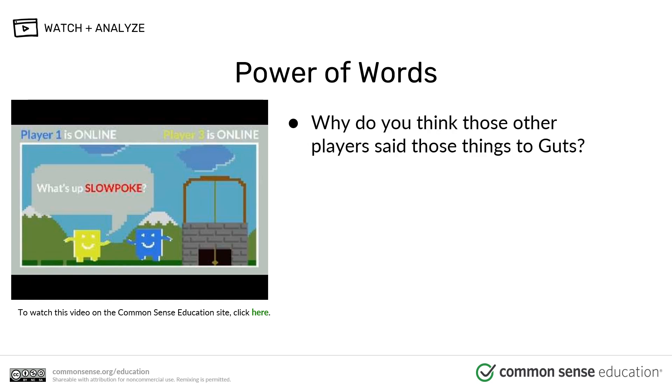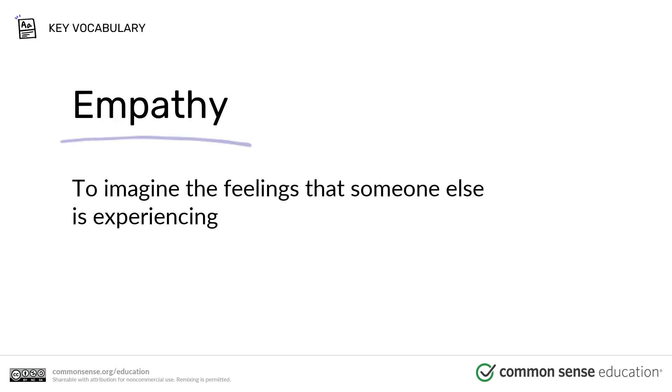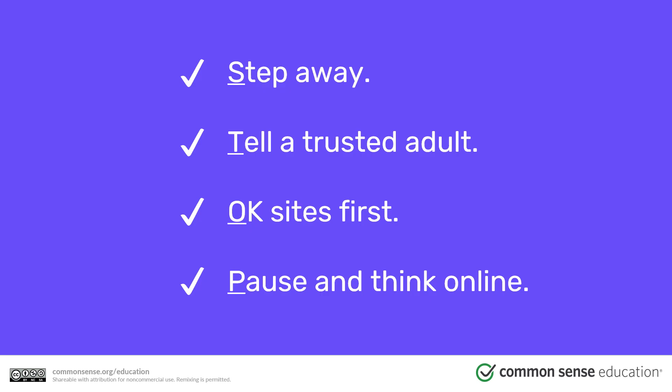Why do you think those other players said those things, such as 'slow poke'? What's the meaning of empathy? To imagine the feelings that someone else is experiencing. When someone is cyberbullying you, you have to use the word STOP: S means step away, T — tell a trusted adult, O — OK sites first, P — pause and think online.